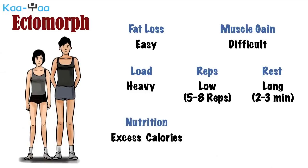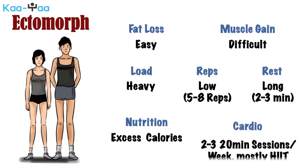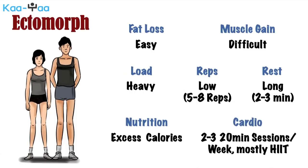It is extremely important for an ectomorph to feed their body adequately to gain muscle. Cardiovascular exercises should be limited to 2-3 short sessions of 20 minutes, with preference given to HIIT rather than steady-state cardio.